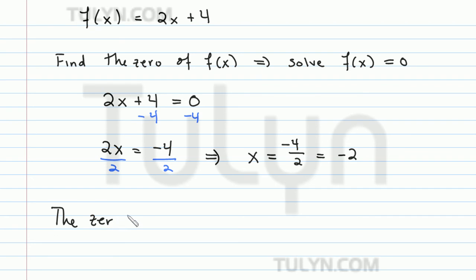So the zero of this function f(x) = 2x + 4 is -2. That's how we find the zero of any given function.